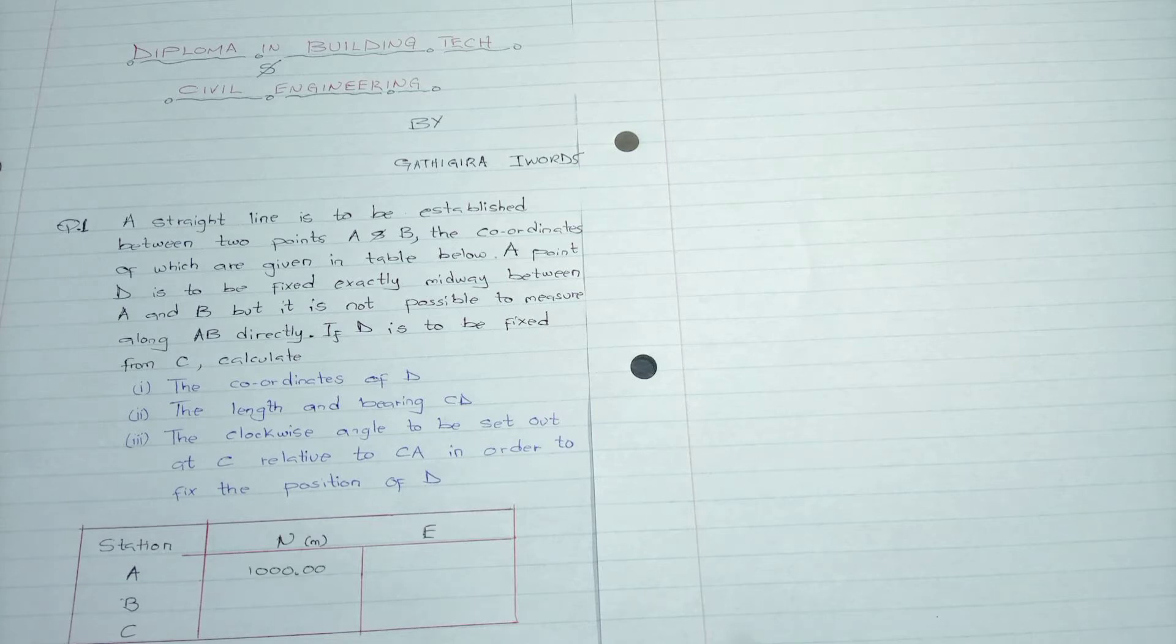And last, the clockwise angle to be set out at C relative to CA in order to fix the position of D. So we have our table with three columns: the station, northing, and easting. For station A we have 1000 meters northing and 1000 meters easting. Then we have the coordinates for B and also for C.